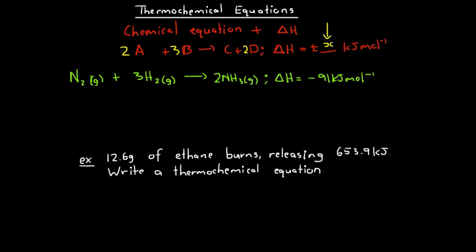This means that if 1 mole of nitrogen reacts with 3 moles of hydrogen to produce 2 moles of ammonia, then 91 kilojoules of energy will be released, and we know energy is released because of the negative sign. Remembering that delta H is the difference between the enthalpy of our products and the enthalpy of our reactants — if the enthalpy of our products is less, then products minus reactants will be a negative number. So if our delta H value is negative, it means energy is being released, and we have an exothermic reaction.